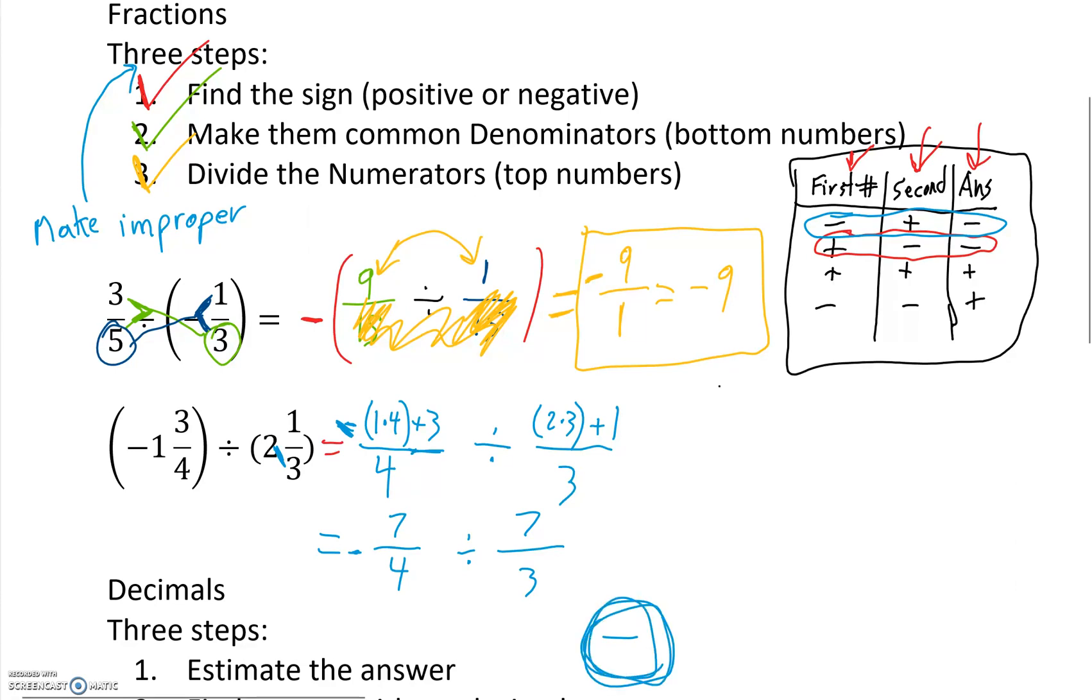Okay? So compared to negative 2, is negative 25 closer, negative 2.5, or negative 0.25? What is the closest to that? Well, definitely, definitely negative 2.5. So that is the right answer.